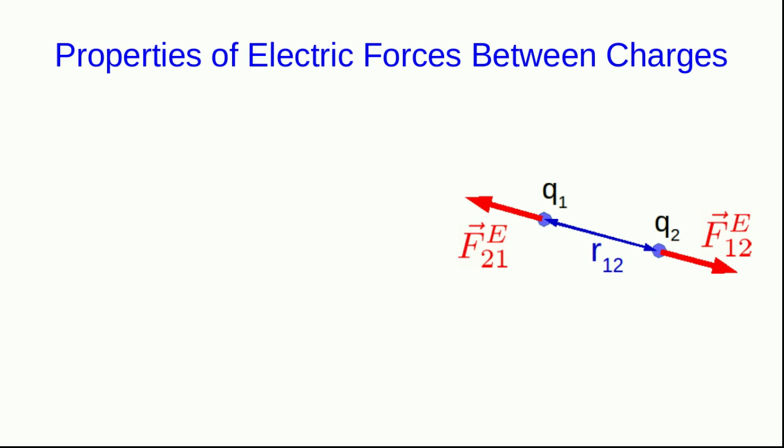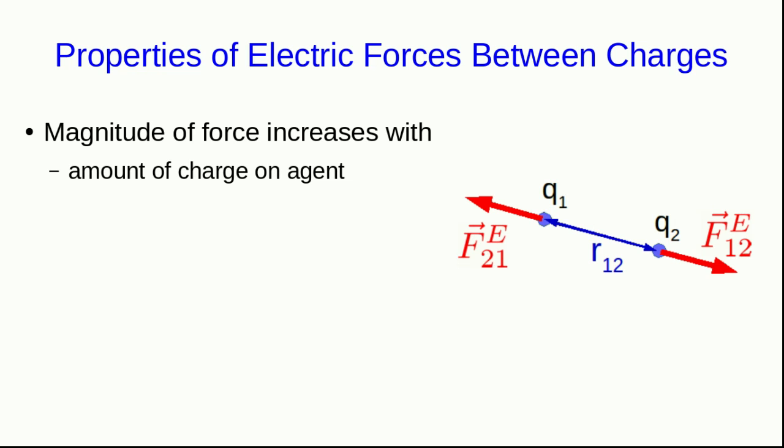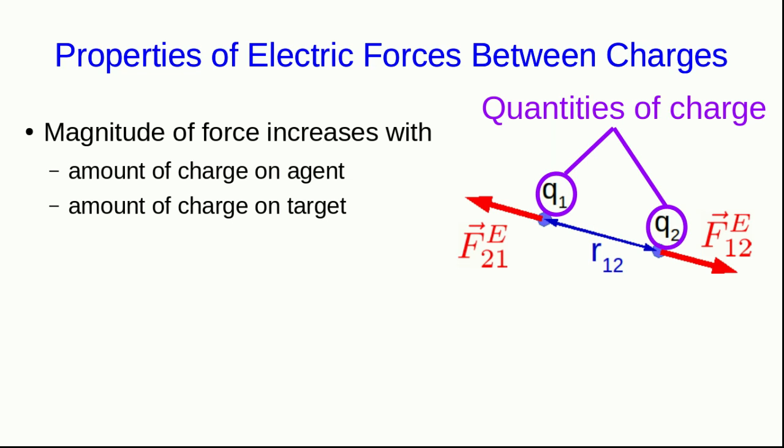From our observations in the previous lectures, we already know a fair bit about the properties of the electric forces that charges exert on each other, and this will let us figure out what the force law should depend on. We know that an object with a larger charge will exert larger electrical forces on other charges. Newton's third law tells us that if it's exerting larger forces, then the forces on it must also be bigger. So the magnitude of the force must increase with the amount of charge on both the agent and the target. This means the force that charge 1 exerts on charge 2 must depend on both q1 and q2.